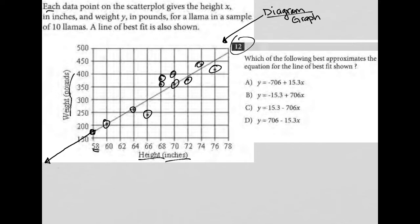the following best approximates the equation for the line of best fit shown. Anytime I see the wording 'equation for the line,' I'm going to think y equals mx plus b. Taking a glance at my answer choices, however, it looks like they've reversed that order, which is perfectly fine, and they've written it as y equals b plus mx. Nothing changes about what b and m represent. b will always represent the y-